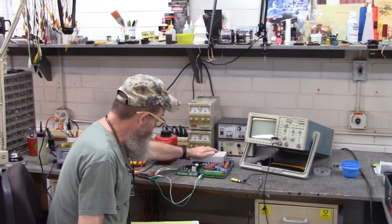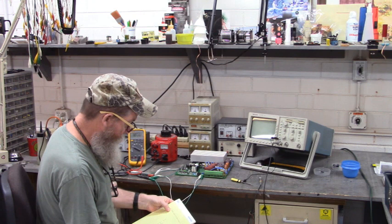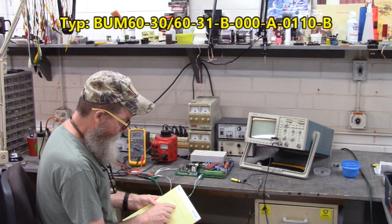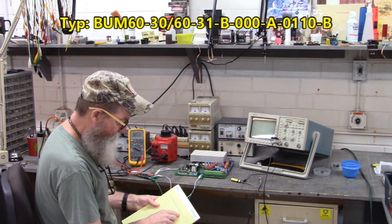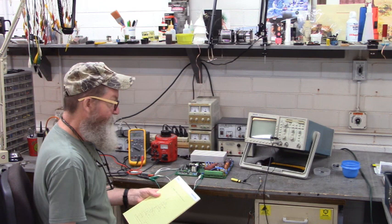Good morning all. Here is the power section, the power board for Baummuller Drive, type BUM60-30-60-31-B-000-A-011-B. That's a long part number.